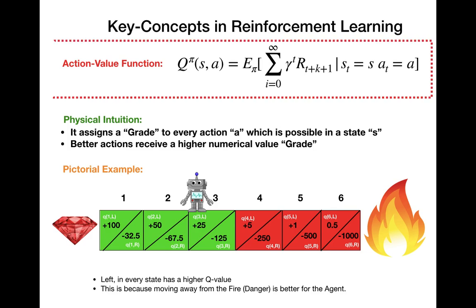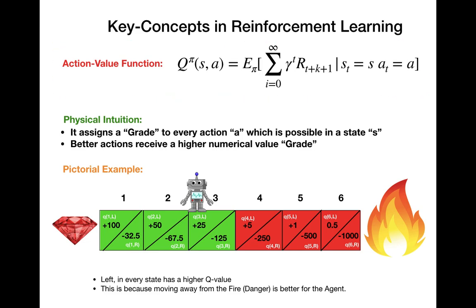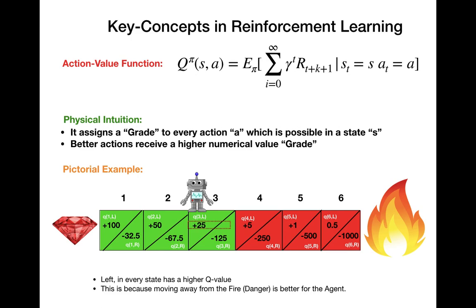Now we will look at the concept of an action value function, also known as the Q-value. The Q-value gives a rank to a particular action that you can take from a particular state. In the picture, our robot is in state number three. If the robot moves to the left, the rank for that action is plus 25. If it moves to the right, the rank is minus 125. So the action value function is used to give a rank to the action you can take in a particular state.